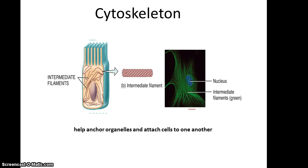The second kind are the intermediate filaments, which are larger than the microfilaments. They are found scattered throughout the body of the cell as well as at the surface, and they help anchor organelles within the cell in the correct places, and also anchor cells to one another.